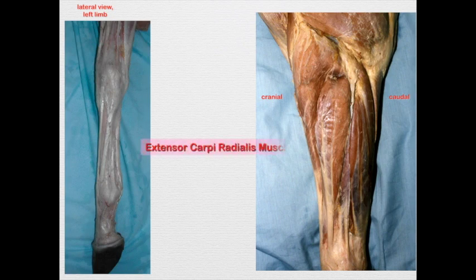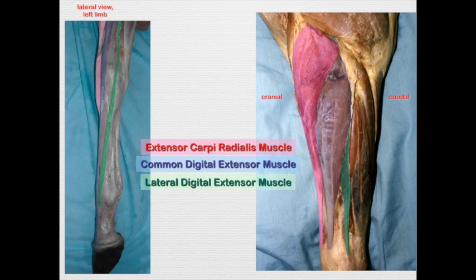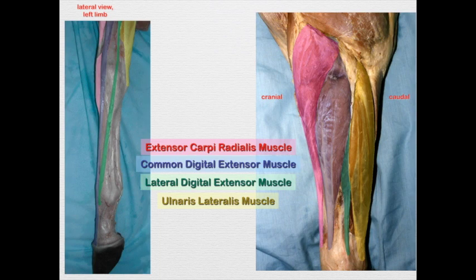Extensor carpi radialis muscle, common digital extensor muscle — yes, we do have a lateral digital extensor muscle. In the equine, it's going to blend in with the common digital extensor tendon and have the same action. Ulnaris lateralis muscle — remember, the ulnaris lateralis in our domestic animals is a flexor, but developmentally it is an extensor muscle, so it is innervated by the radial nerve like the other extensors.